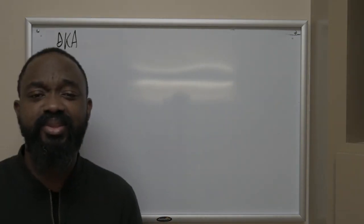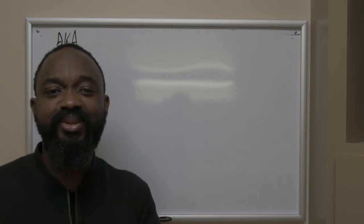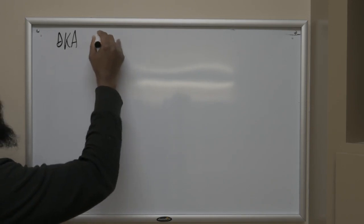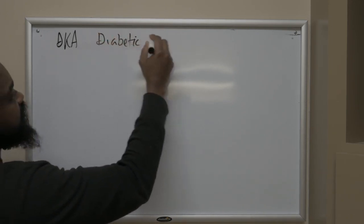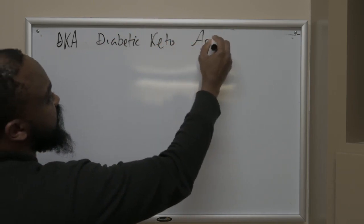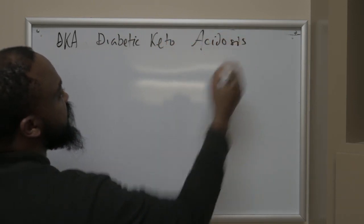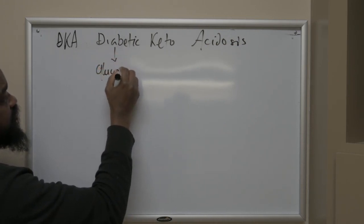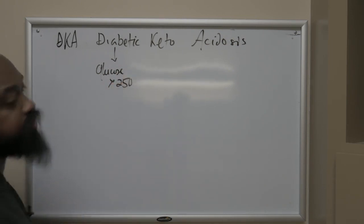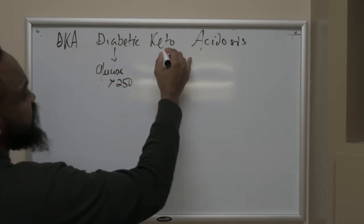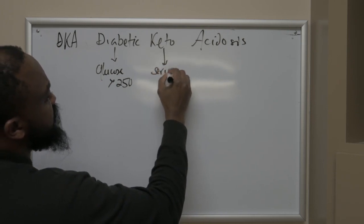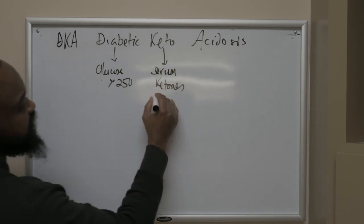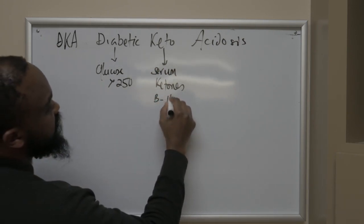I always like to say that the diagnosis is in the name for DKA. So if you were to break this down further, we would say diabetic ketoacidosis. Based on the diagnostic criteria, what we have here is glucose of above 250. The keto here basically says serum ketones, not urine ketones. And if we have to be specific here, we'll say beta-hydroxybutyrate.